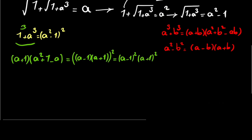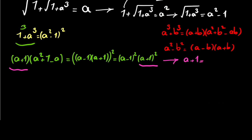You can see a plus 1 on both the right and left sides. You can cancel them, but don't forget that one answer for this equation is a plus 1 equals 0, meaning a equals negative 1. So on the left side we have a squared plus 1 minus a.